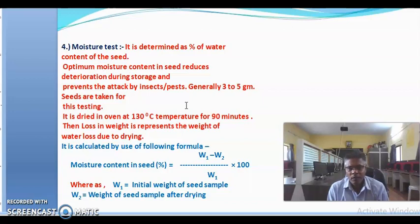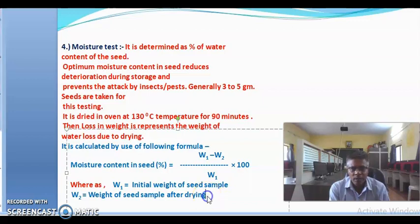W2 is the weight of seed sample after drying. By the use of this formula, the moisture tests are conducted and it detects how much moisture is contained in that seed, whether it is fit for storage or unfit for storage. These tests are mainly carried out in laboratory.